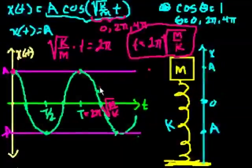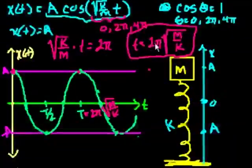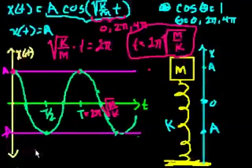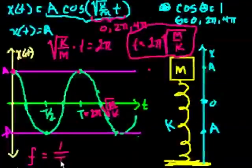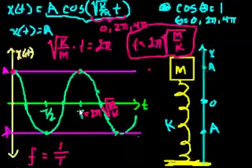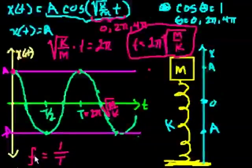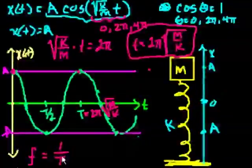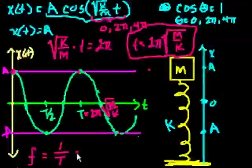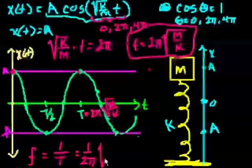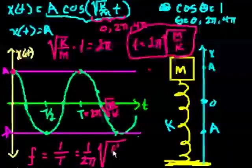And then what about the frequency? If you wanted to know cycles per second, well, that's just the inverse of the period, right? So if I want to know the frequency, that equals 1 over the period, right? Period is given in seconds per cycle. So frequency is cycles per second. And this is seconds per cycle. So frequency is just going to be 1 over this, which is 1 over 2 pi times the square root of k over m. That's the frequency.